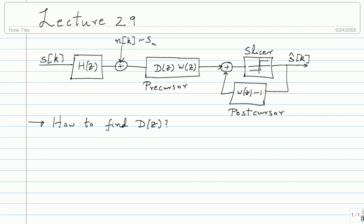The first choice is the zero forcing decision feedback equalizer, where D(Z) = 1/H. In the linear equalizer we just did 1/H and then sliced. Here, we also need to find the noise whitening filter W(Z) via spectral factorization — that's the additional work compared to the linear equalizer.